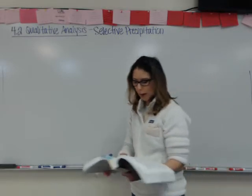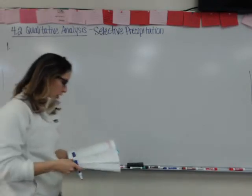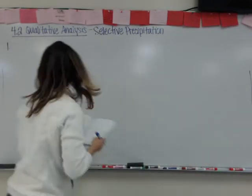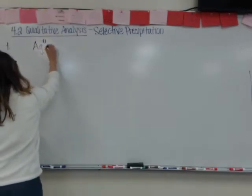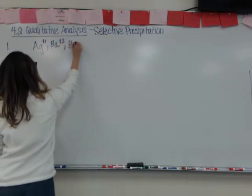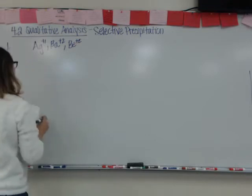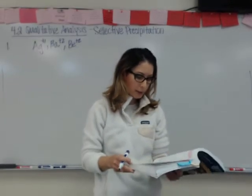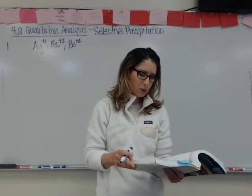Practice problem number one says: describe a process to individually remove the ions silver, barium, and beryllium from a solution. Be sure to list the compounds that you add in order and the method of removing the precipitate. You may wish to use a flowchart.